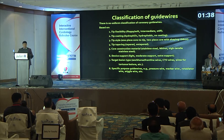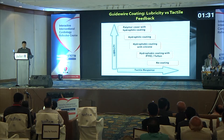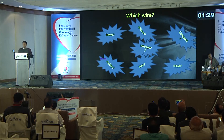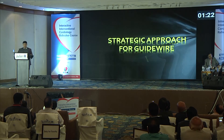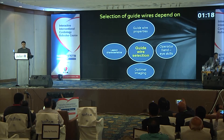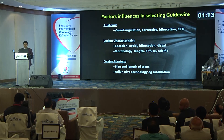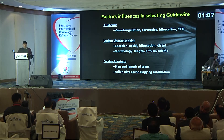There is no uniform classification for guide wires, but we can classify them according to characteristics like tip flexibility, tip coating, tip style, tip tapering, construction material, and device support. Interventionists can become puzzled in the cath lab over wire selection. A strategic approach is needed — guide wire selection depends on lesion characteristics, guide wire properties, operator skill, and optimal imaging. Factors influencing selection include anatomy of the vessel, lesion characteristics, and device strategy.